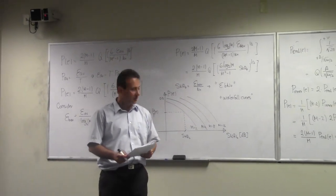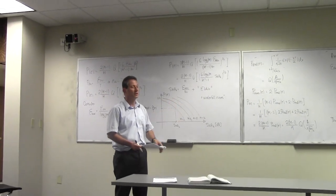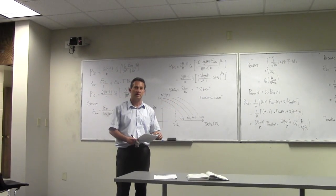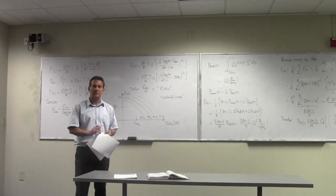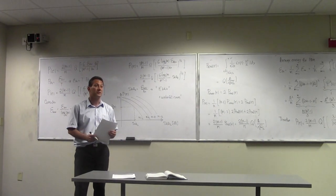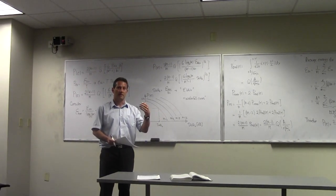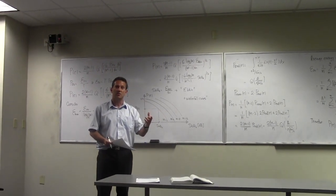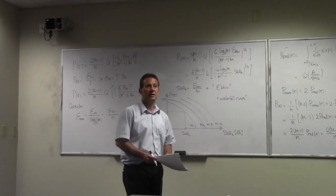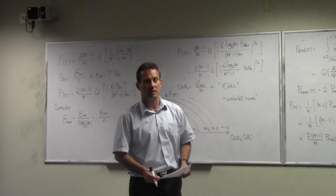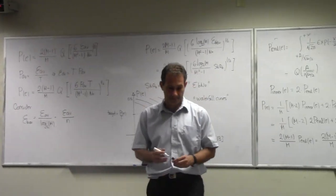I'm going to stop here — that's as far as we're going to take it for one-dimensional signaling. What we're going to do next time is tackle two-dimensional signaling: we'll first tackle PSK, which is easier, and then we'll talk about how to get probability of error for that.